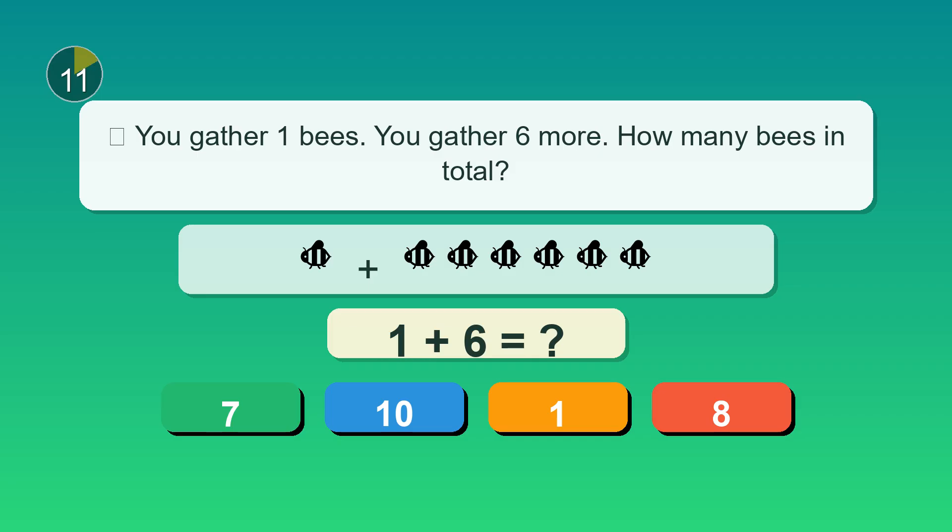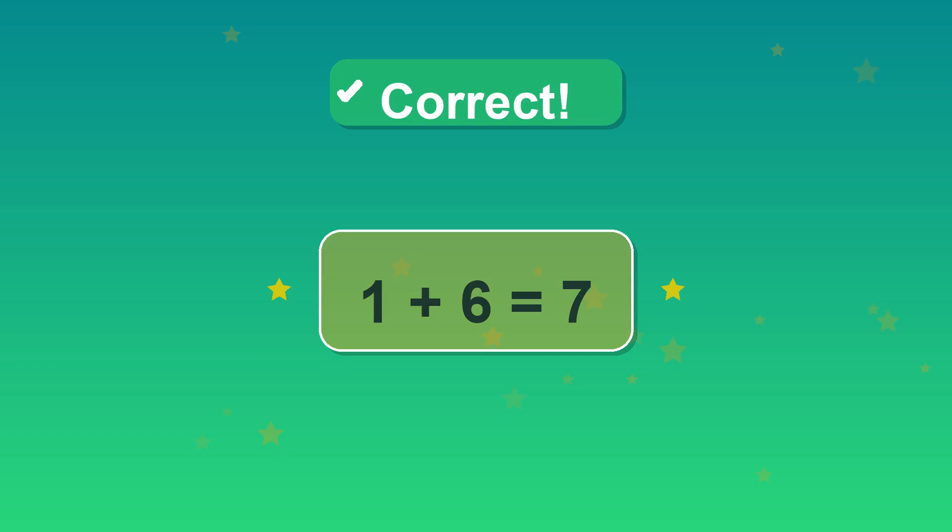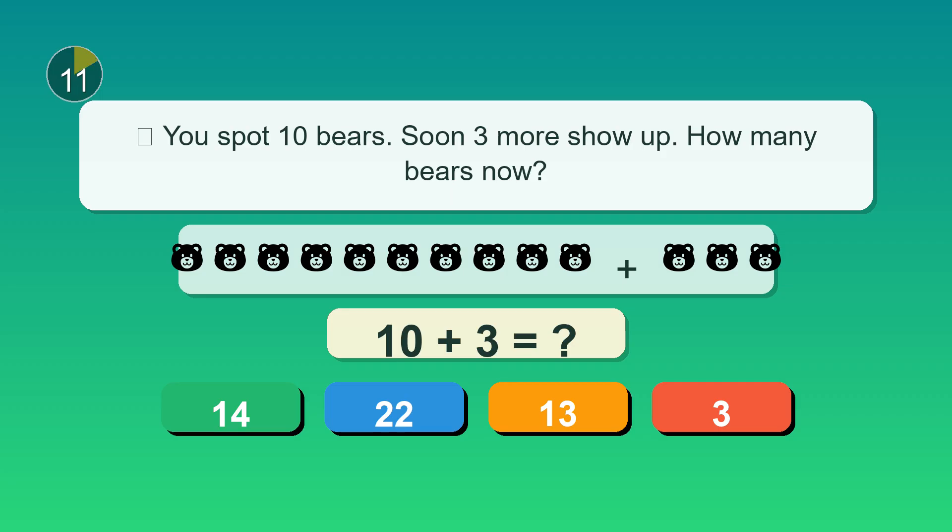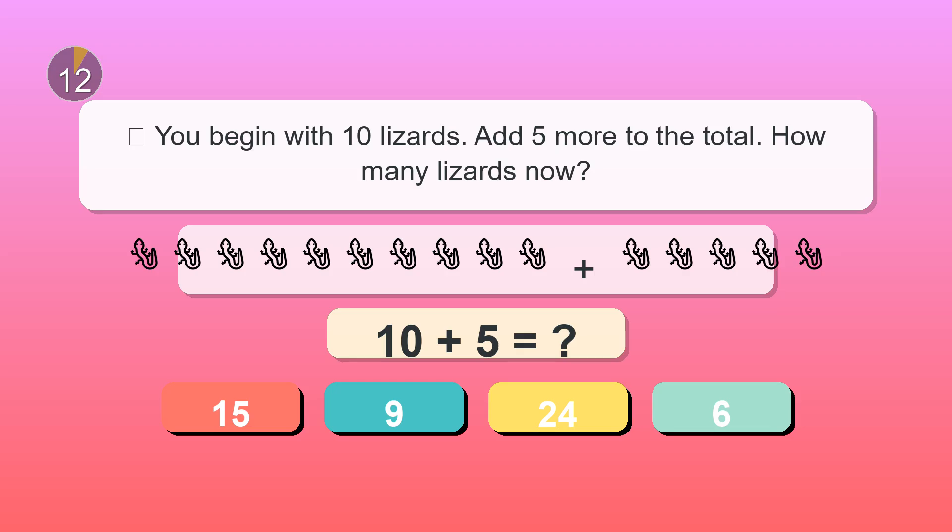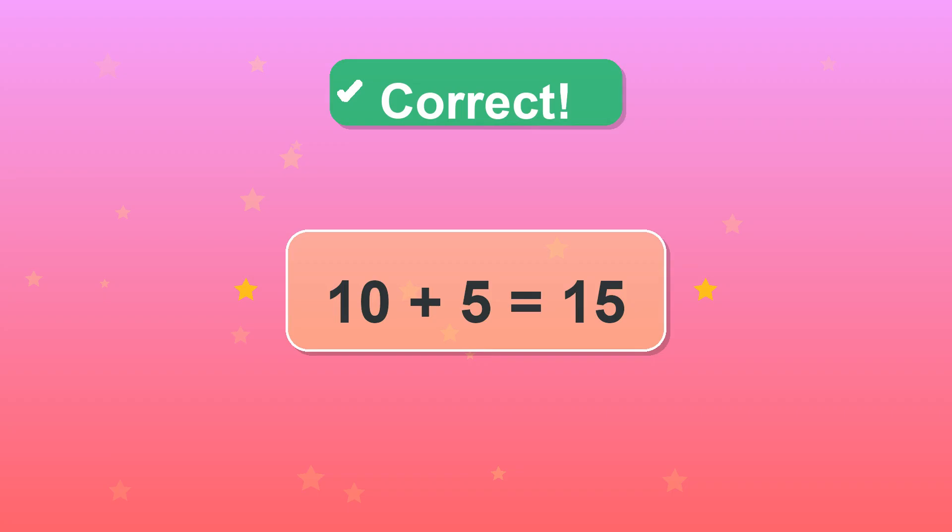You gather one bees. You gather six more. How many bees in total? Seven. Nice work. You spot ten bears. Soon three more show up. How many bears now? 13. Well done. You begin with ten lizards. Add five more to the total. How many lizards now? 15. Right on.